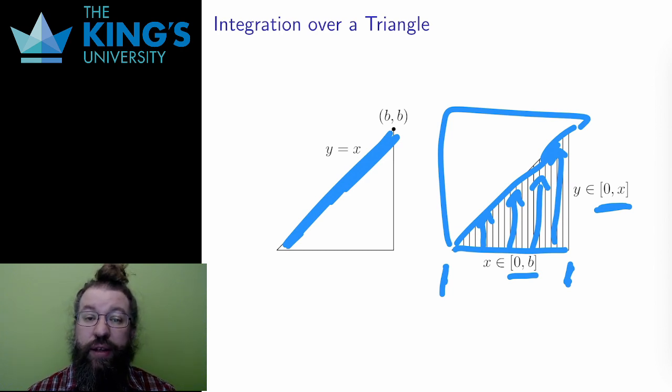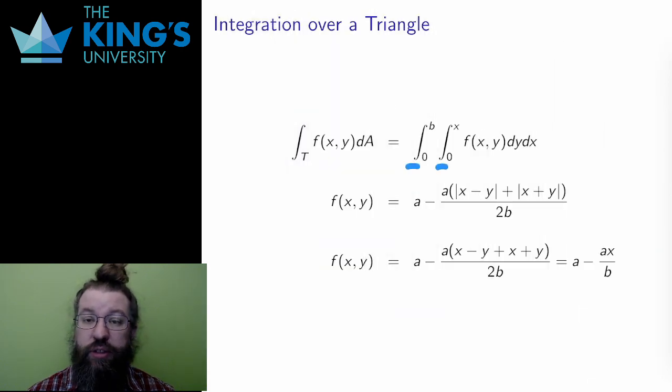This lets me get to the integral. Here are those bounds: 0 to b on the outside for x. The outside bounds must always be constant. And then 0 to x on the inside. The variable bounds can only depend on variables outside of them. x is outside of y, so the y bounds can depend on x.